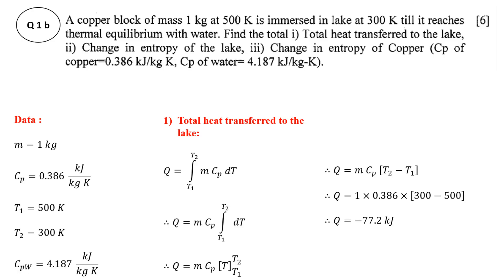So Q is equal to minus 77.2 kilojoules. The heat that is transferred to the lake is 77.2 kilojoules and the heat is transferred from the copper block. So the copper block is losing the heat and that heat is transferred to the lake. As the copper block is losing the heat, the negative sign is there.